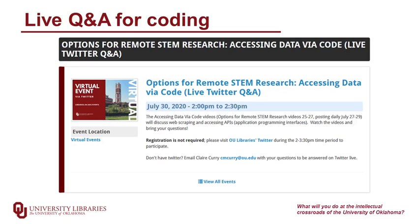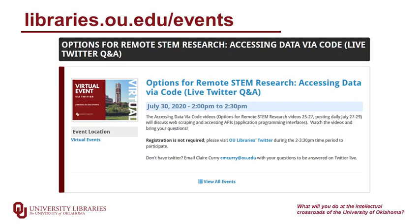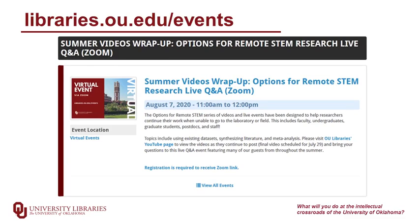We're going to wrap up our series on accessing data via code with a live Q&A on Twitter on July 30th. It'll be from 2 to 3:30 p.m. Central Daylight Time. If you don't have Twitter, you can email us your questions at cmcurry@ou.edu. No registration is required, but you can read more about this event at libraries.ou.edu/events. We're also going to have a wrap-up Q&A for the whole summer series on August 7th — go to libraries.ou.edu/events to read more and register.